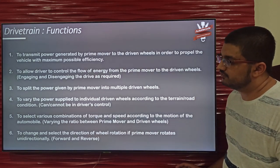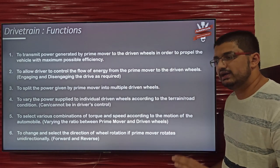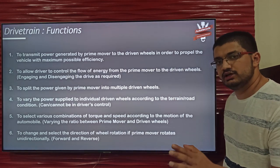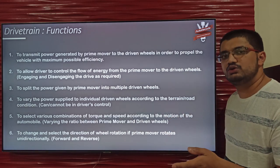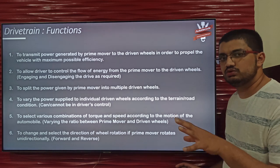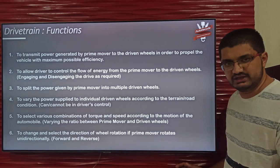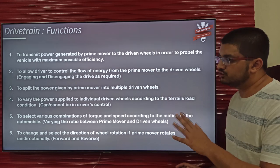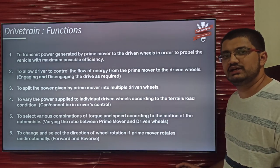The fifth function is to select various combinations of torque and speed. When starting from stall we need maximum torque, and when cruising we need higher speed but less torque. So in different scenarios we either need higher torque or higher speed, and depending on that we engage different gears. This is done by the drivetrain — various set points of torque and speed can be achieved.